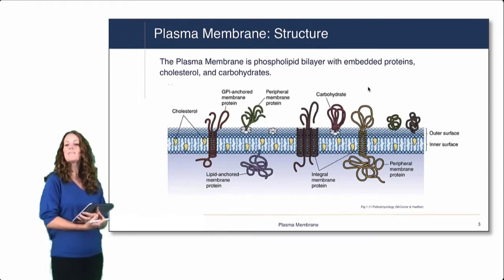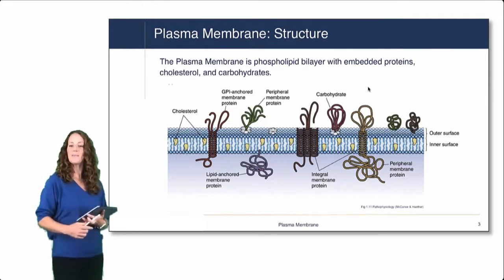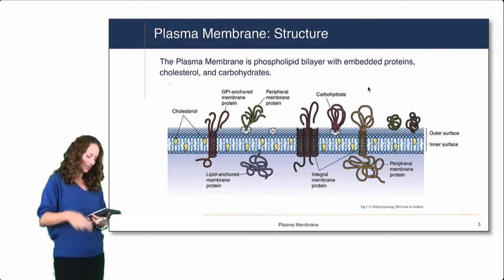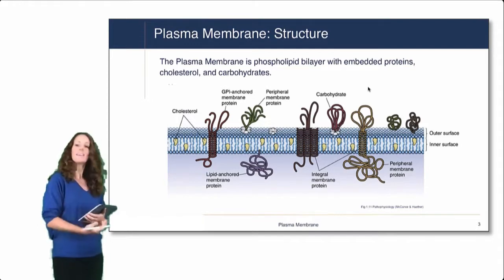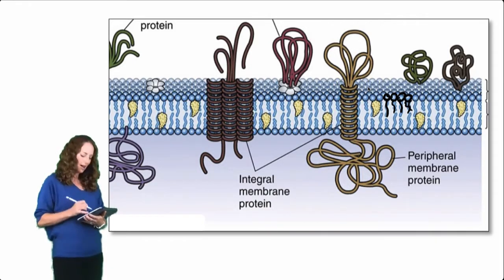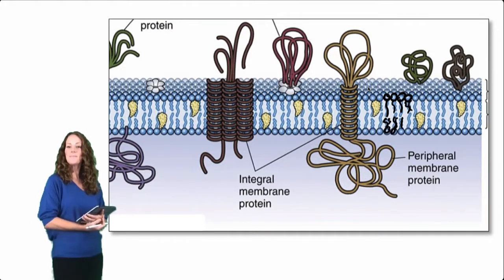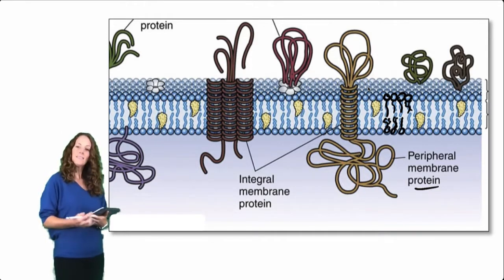The plasma membrane is a phospholipid bilayer with embedded proteins, cholesterol, and carbohydrates. This image shows all of those different molecules. Zooming in, you can see the phospholipids making up the primary structure of the plasma membrane — a double layer of phospholipids — along with different proteins, cholesterol, and carbohydrates.